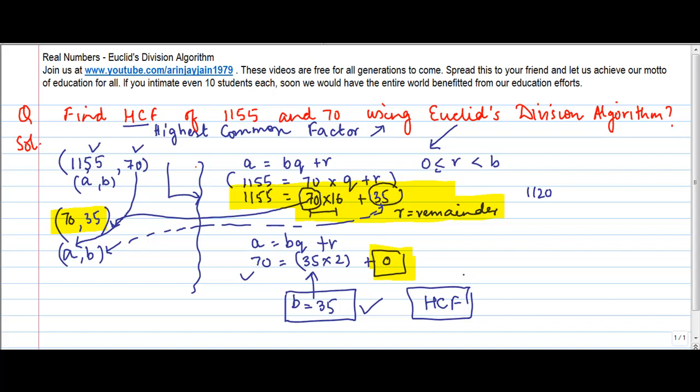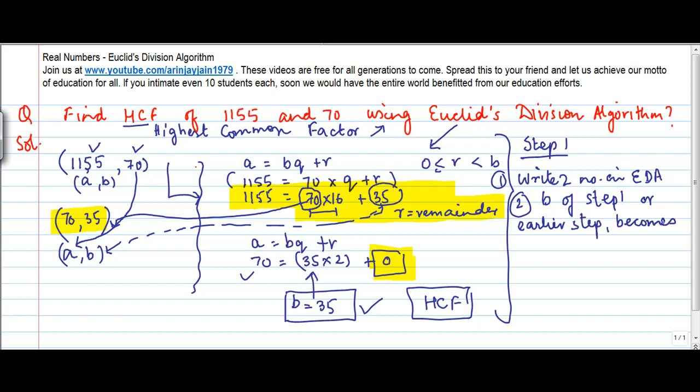So as steps, if I were to write this down for you: Step 1 - Write two numbers in Euclid's Division Algorithm form. Step 2 - b of step 1 or whichever is the earlier step becomes a for step 2.